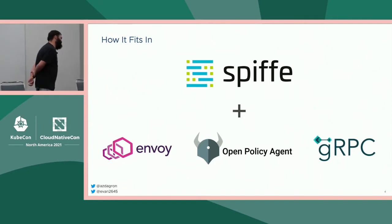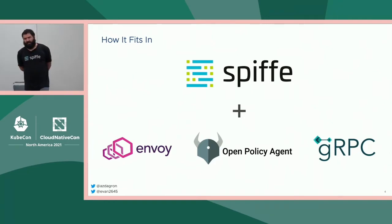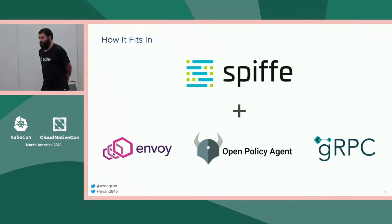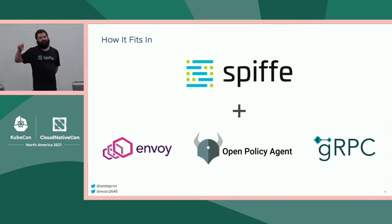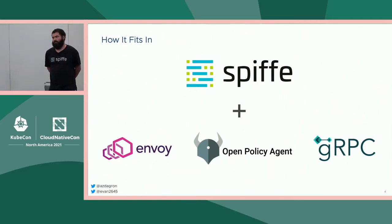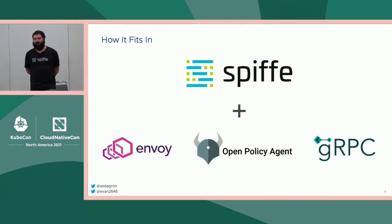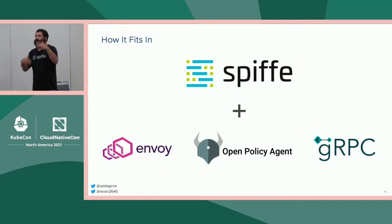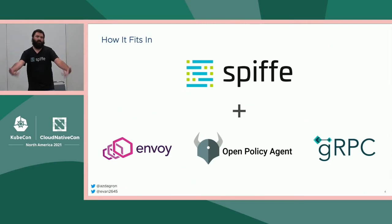Assigning the same SPIFFE ID to all pods in a deployment makes authorization easier and matches the mental model most people follow. There are folks who say they want every individual pod to receive a unique identity — they do this for auditing, observability, and forensics — but it does make things more complicated. We aim to identify workloads however you view that, and we have some later slides talking about naming conventions and ways you may arrange this.